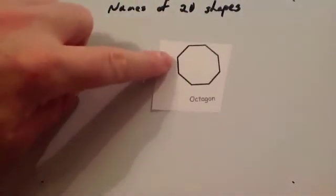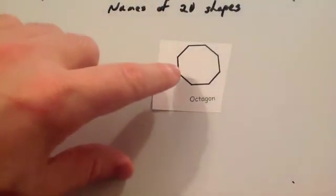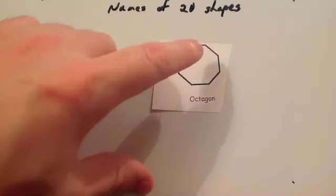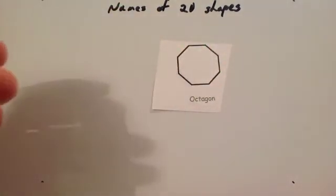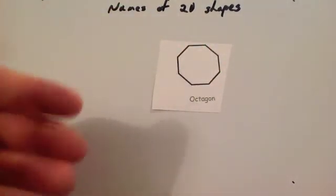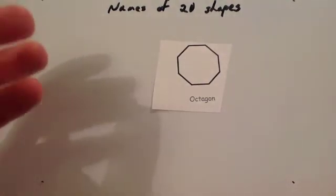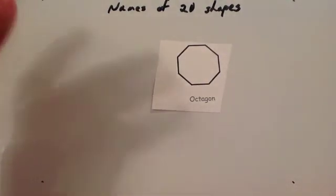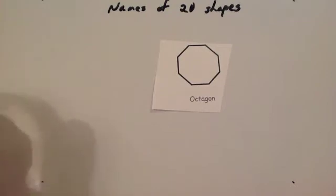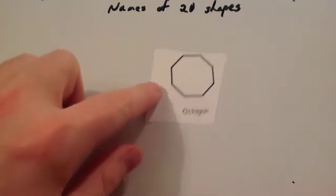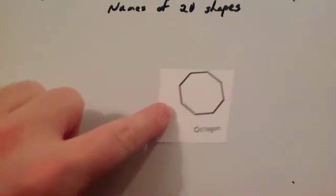So let's have a look at some more. Octagon, 8 sides. That's an octagon, 8 sides. Think of octopus. Obviously, these are straight-sided shapes, different polygons. We'll go into some other 2D shapes soon. So that's called an octagon, 8 sides.